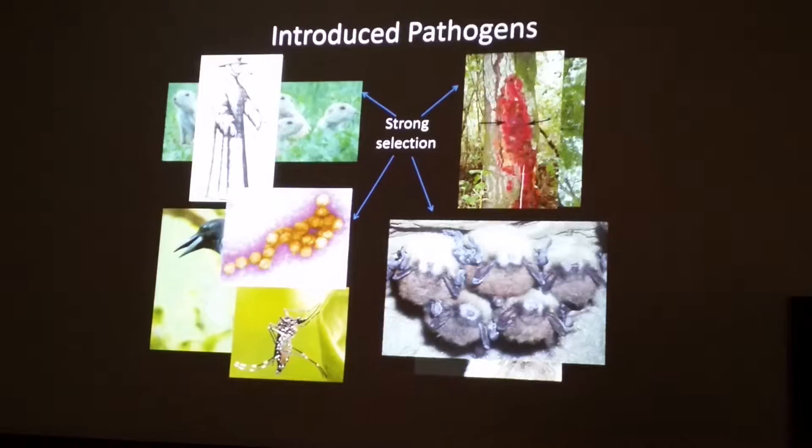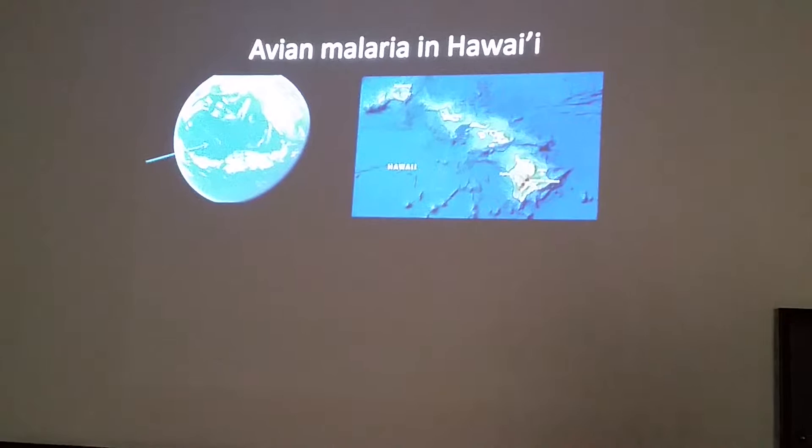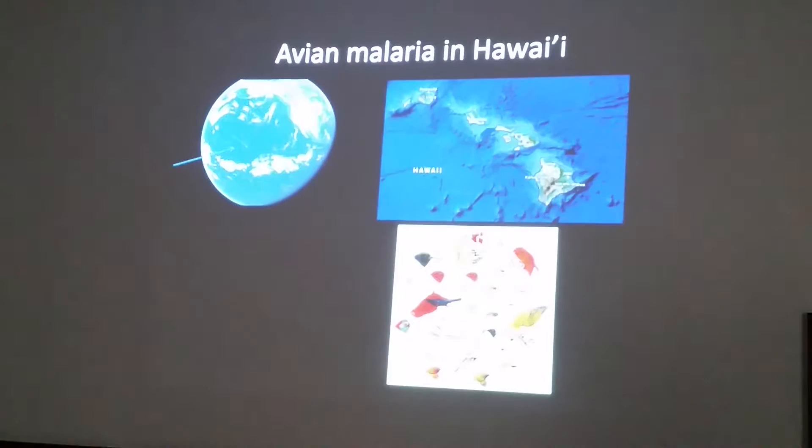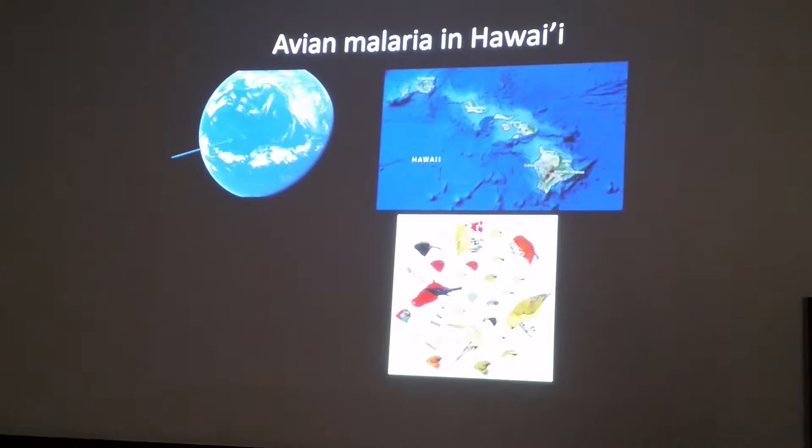Today I'll be telling you about avian malaria in Hawaii. Avian malaria is the introduced pathogen I'm focusing on. Hawaii is a really isolated archipelago in the middle of the Pacific Ocean, 4,000 kilometers from the nearest continent. As a result of its isolation, it has a lot of really classical examples of adaptive radiation, including the famous Hawaiian honeycreepers shown here.